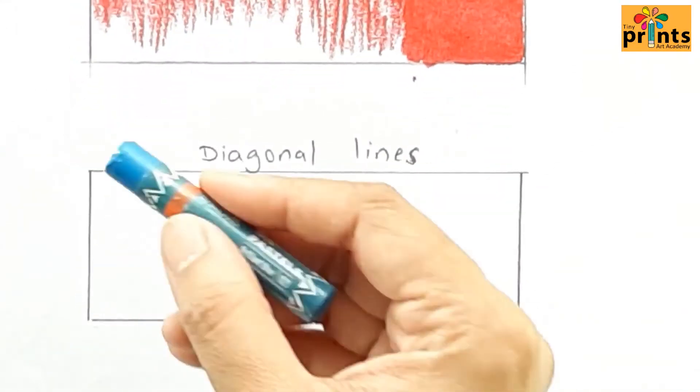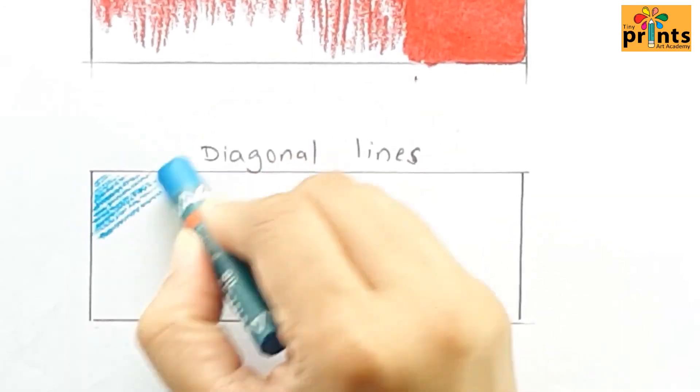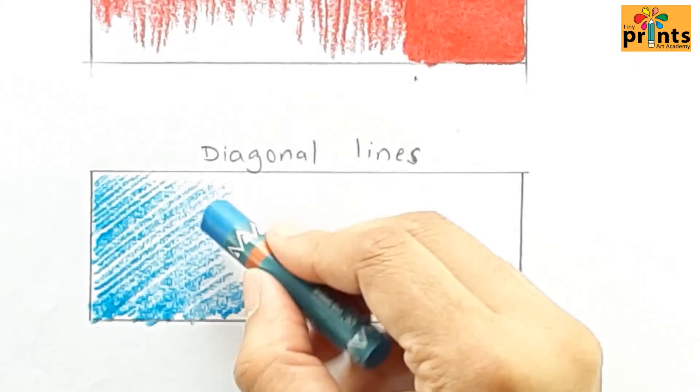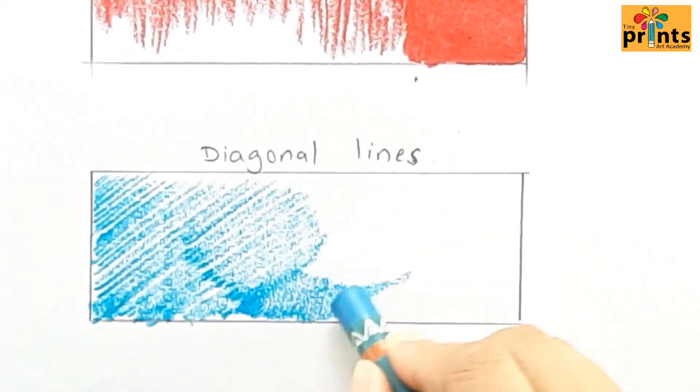Diagonal stroke - I'm using brilliant blue color for this one. Start working with diagonal lines.